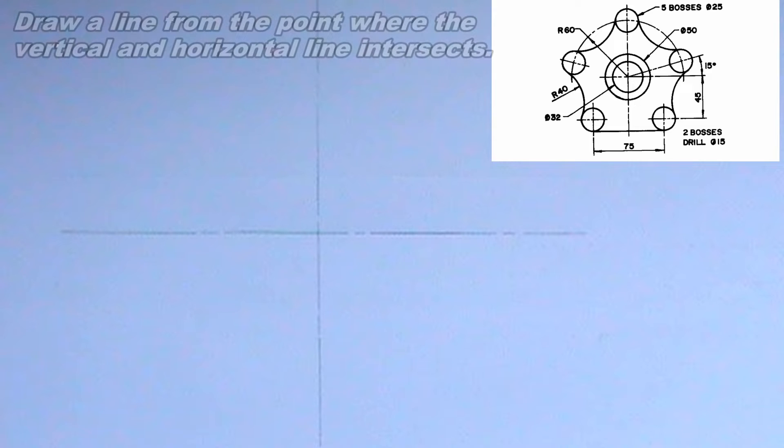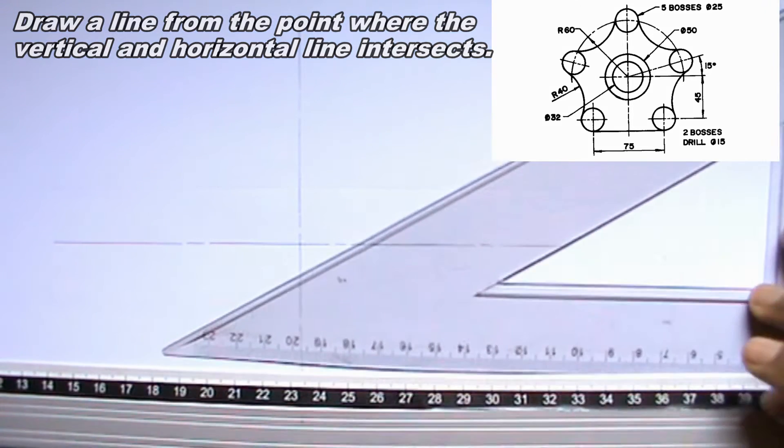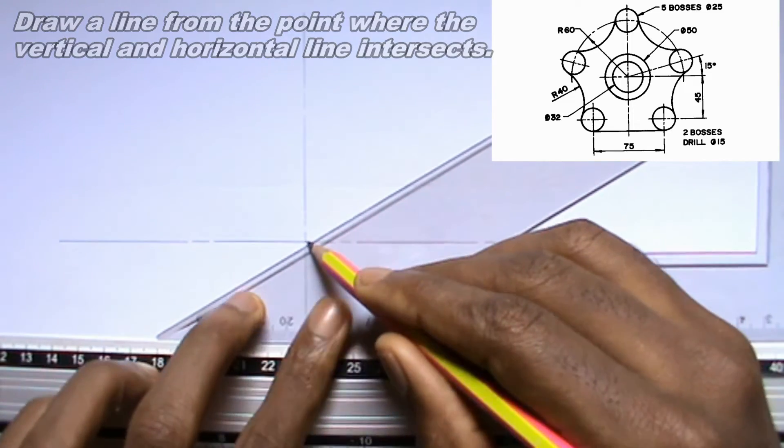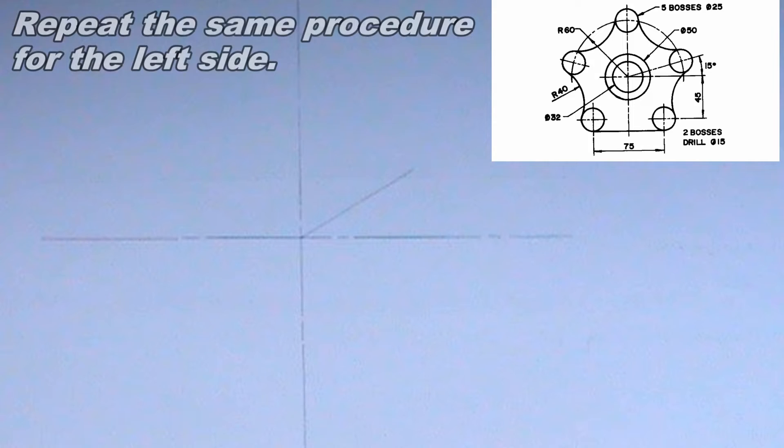Next, I will draw a line from the point where the vertical and horizontal line intersects. The line should be inclined at 30 degrees to the horizontal line. I will repeat the same procedure for the left side.